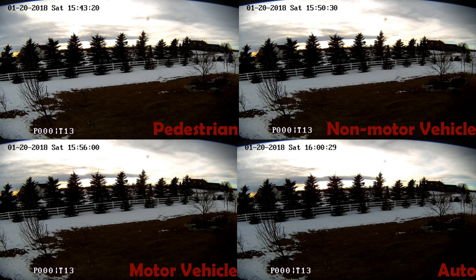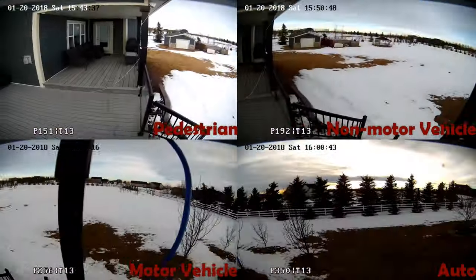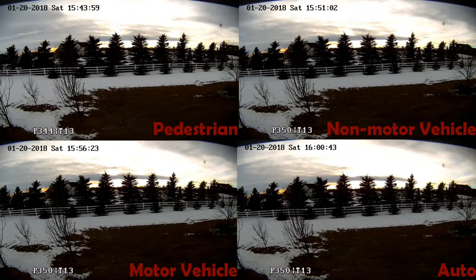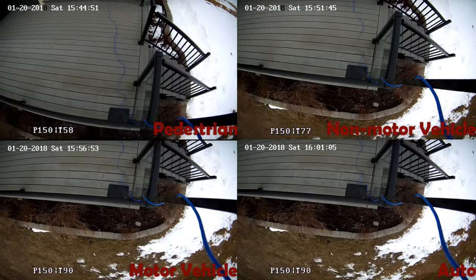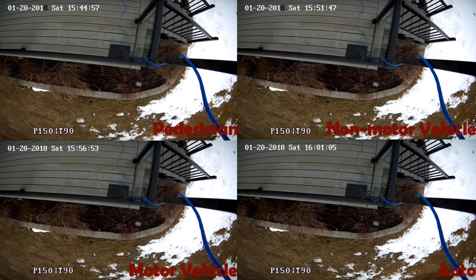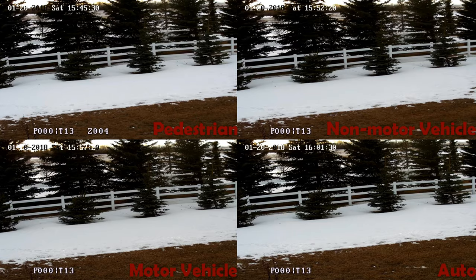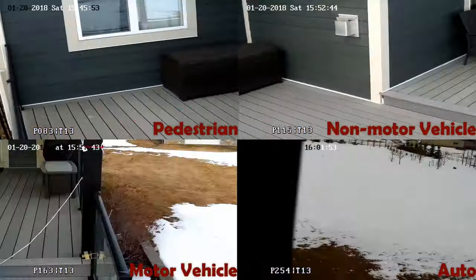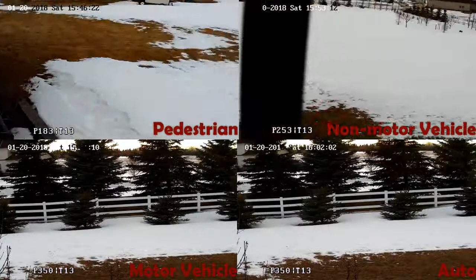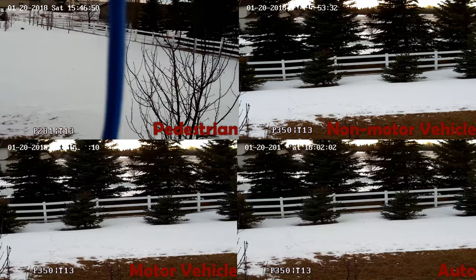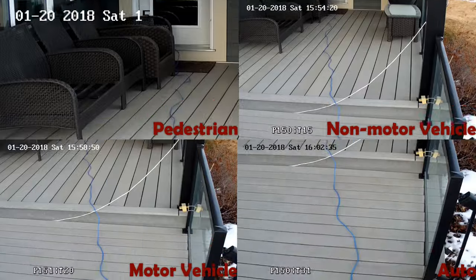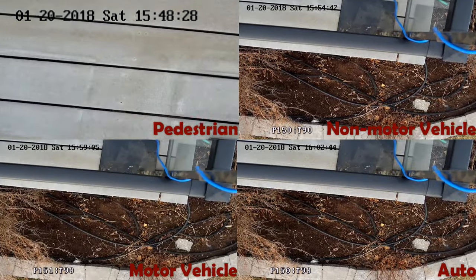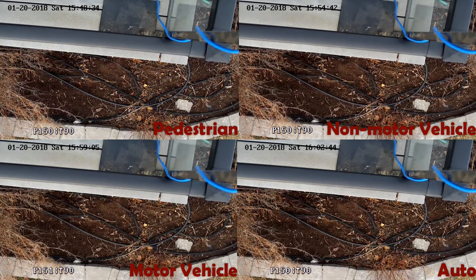Let's compare the zero to 350 pan at zero zoom. Now the zero to 90 tilt at zero zoom. Next, the zero to 350 pan at four times zoom. And finally, the zero to 90 tilt at four times zoom.